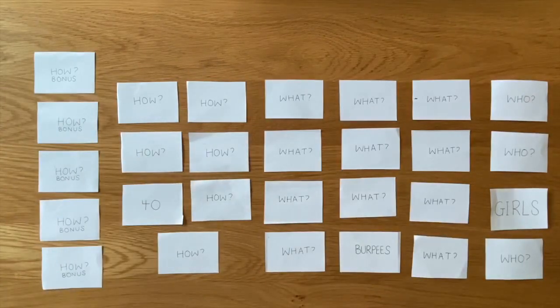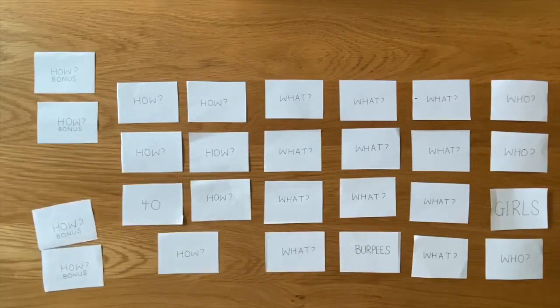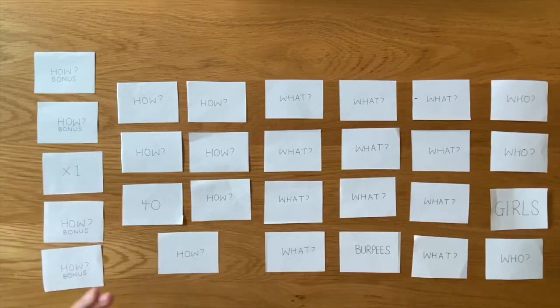So number one to five, they choose a number. If it's number three, turn over and it's times by one. So only one repetition.